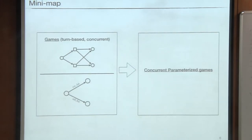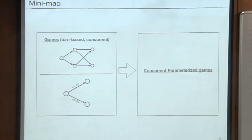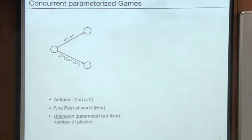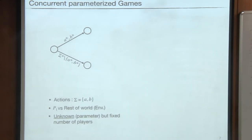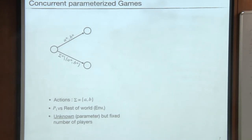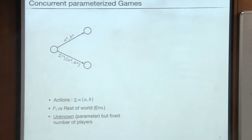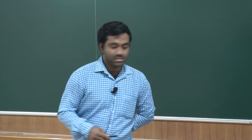Now I move to concurrent parameterized games. A natural question is: what if we do not fix the number of players? The parameter here is the number of players. We consider player 1 versus the rest of the world, which we call the environment. Player 1 does not know how many players are playing. In a toy example: whatever number of players are playing, if all choose the same letter the game goes one way, otherwise it goes another way.